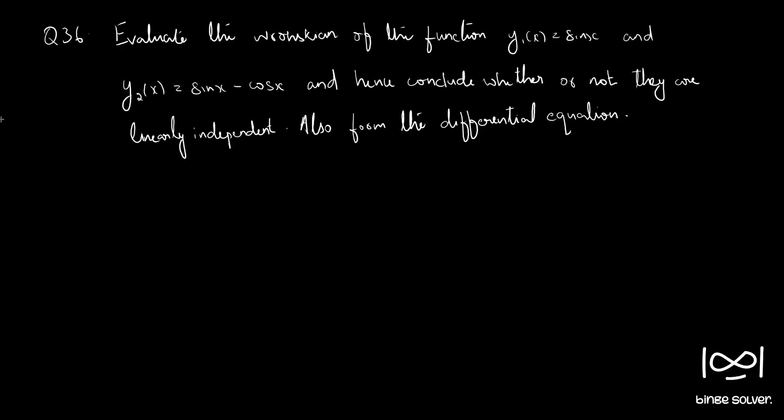Question 36. Evaluate the Wronskian of the function y1(x) equals sin x and y2(x) equals sin x minus cos x, and hence conclude whether or not they are linearly independent. Also form the differential equation.